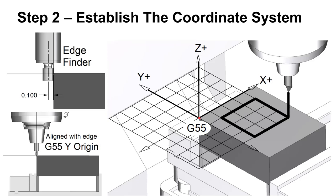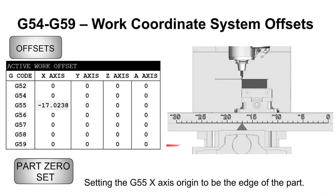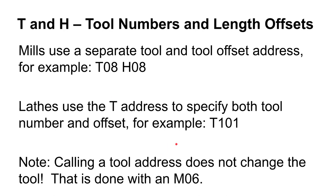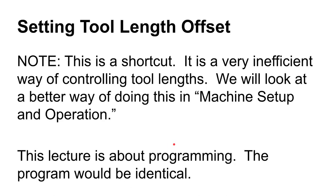There's a better way of doing this that I'll cover later. But for now you can see how it's being compensated for. When we send the tool to X0 Y0 Z0 with tool 8 enabled, length compensation on, and G55 enabled, the tip of this tool will go right to that spot.